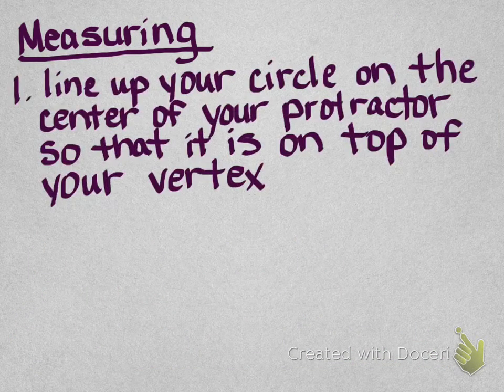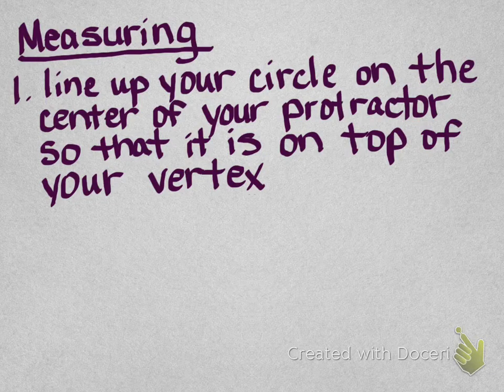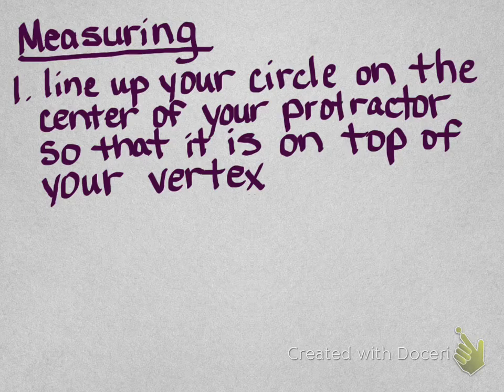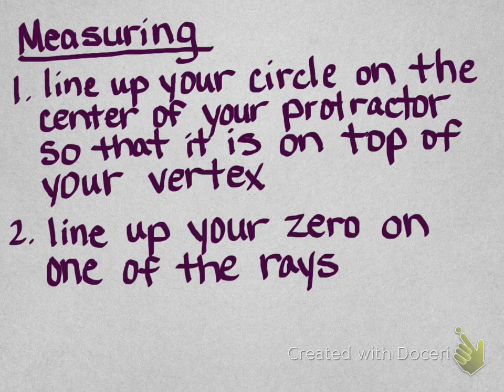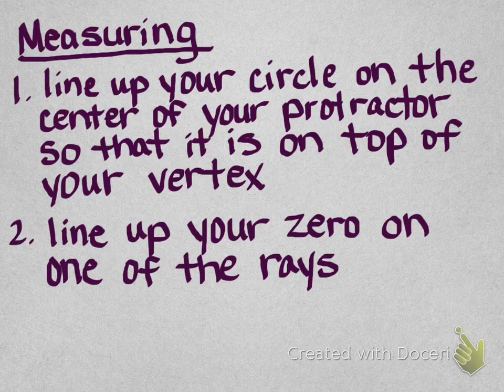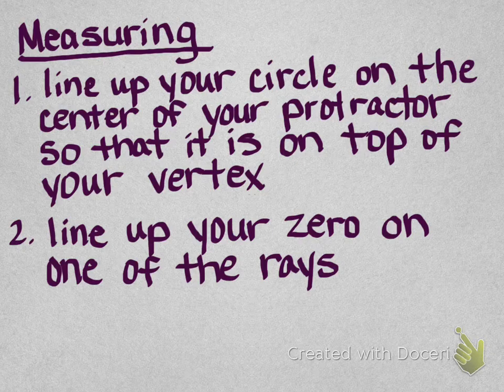So, when we go to measure, we need to line up our circle protractor. There's going to be a circle on the very center of your circle protractor. You're going to line that up so that it is on top of the vertex of the angle that you're trying to measure. You're going to line up the actual protractor portion, line up your zero on one of the rays, so you're going to probably put your pencil on that center dot of the protractor itself, and turn it until the zero is level with one of your rays.